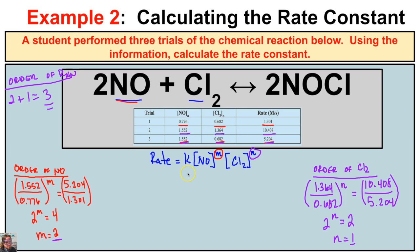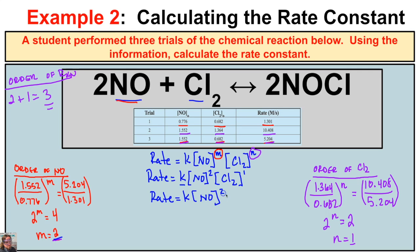Now we write the rate law for this chemical reaction. The rate law is: rate equals K times the concentration of NO squared times the concentration of Cl2 to the first power, which simplifies to rate equals K times the concentration of NO squared times the concentration of Cl2. But we're not just asked to find the rate law — we want to find the rate constant K and take this problem a step further.